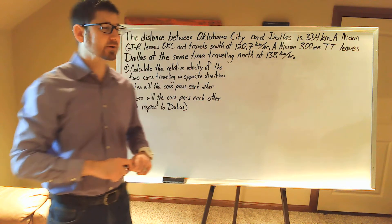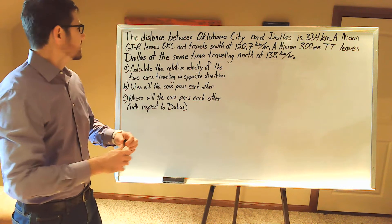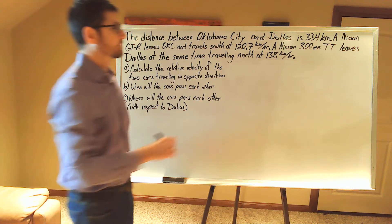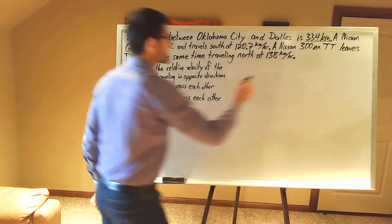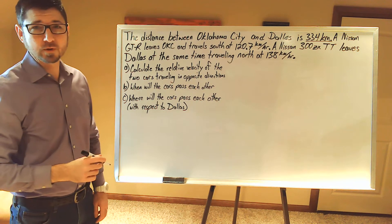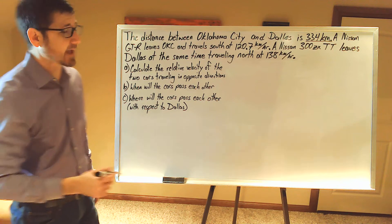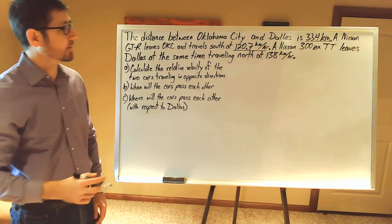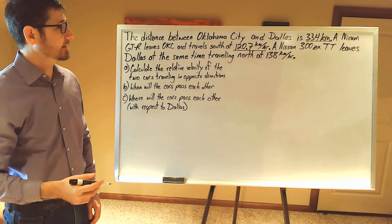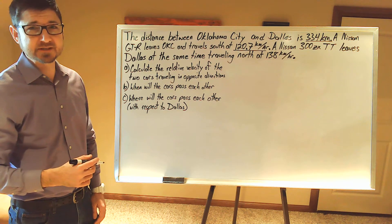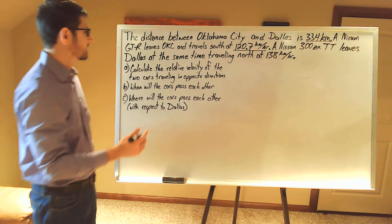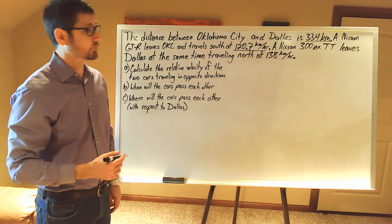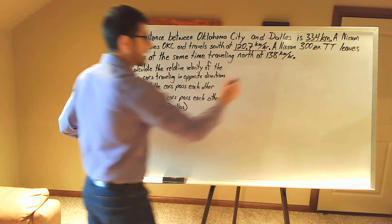Let's go ahead and get started. The distance between Oklahoma City and Dallas is 334 kilometers. A Nissan GT-R leaves Oklahoma City and travels south at 120.7 kilometers per hour, and a Nissan 300ZX Twin Turbo leaves Dallas at the same time traveling north at 138 kilometers per hour.